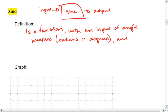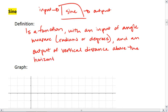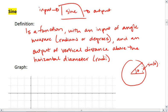And an output of vertical distance above the horizontal diameter. And this is in radius lengths, or we can say radii. I know that seems like a kind of convoluted definition, but it's important to understand that for any given circle, we plug in angle measure theta. Sine tells us the vertical distance above this horizontal diameter in terms of radius lengths.